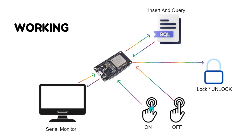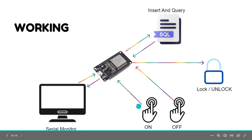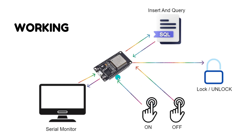I'll have an ESP32 and I'll be using two touch pins — one for turning it on and another for turning it off. When I press the touch-on button, it's going to log data to the SQLite database with a timestamp and an action, such as gate open or gate closed. It will then go ahead and unlock the lock. Similarly, when I do a turn-off, it will log that the door was closed and lock the door.